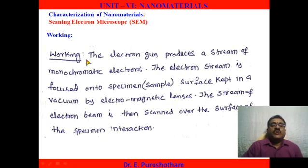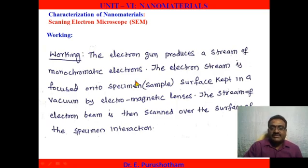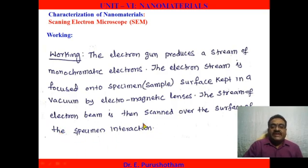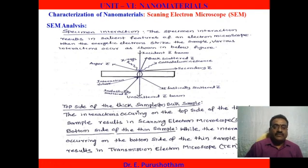The electron gun produces a stream of monochromatic electrons. The electron stream is focused on the sample or specimen surface kept in a vacuum by electromagnetic lenses. The stream of the electron beam is then scanned over the surface of the specimen. From this specimen interaction, we can observe the image and characterize the sample surface.